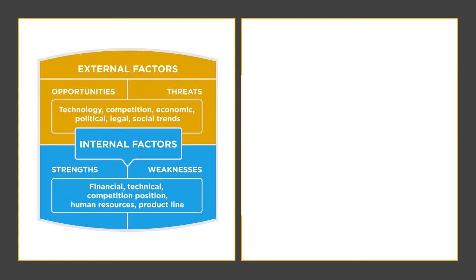Weaknesses stop an organization from performing at its optimal level. They are areas where the business needs to improve to remain competitive — the opposite of strengths. Maybe we have a weak brand, higher than average turnover rates, high levels of debt, an inadequate supply chain, or maybe even a lack of capital.